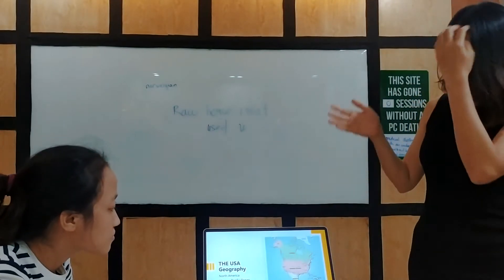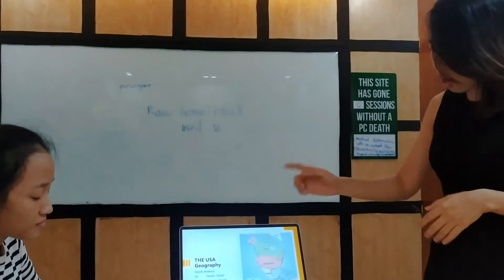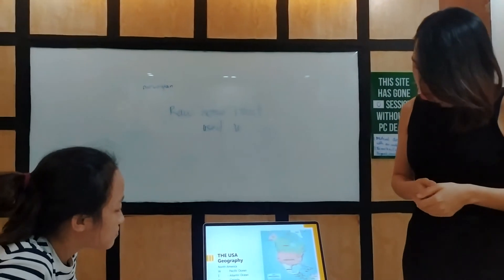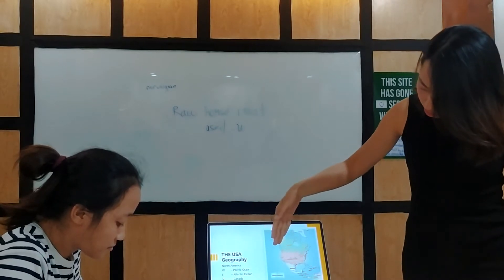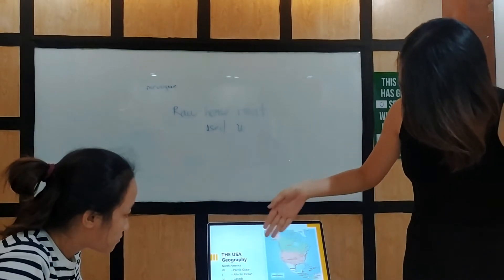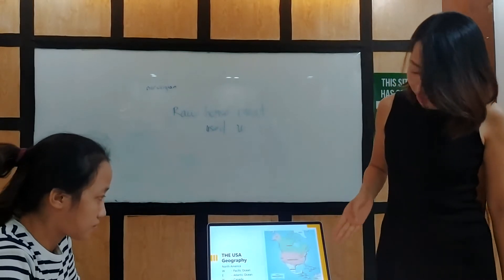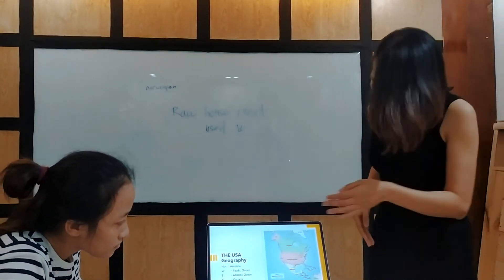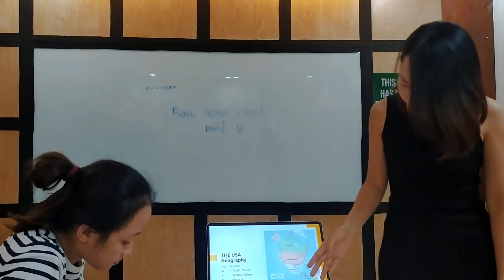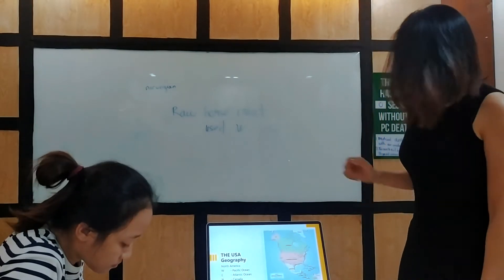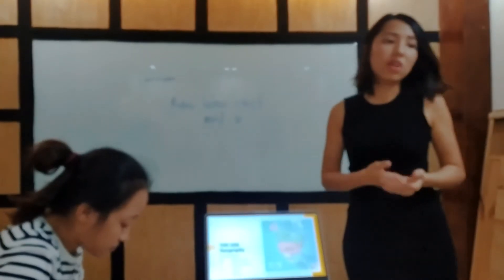The United States of America is located in North America. The country borders to the west by the Pacific Ocean and to the east by the Atlantic Ocean. Along the northern border is Canada and the southern border is Mexico. It has 50 states and the District of Columbia.